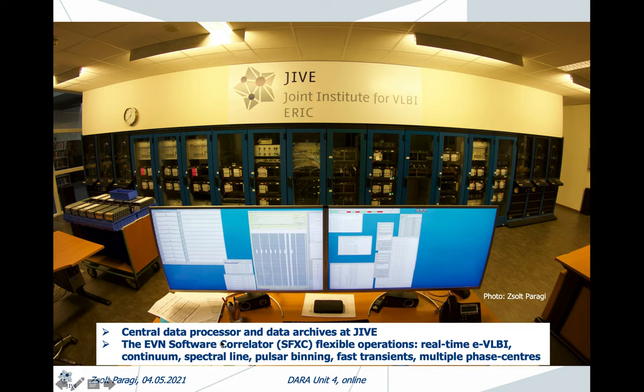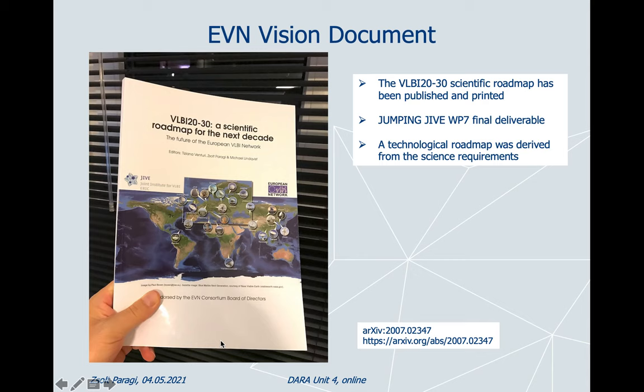All the data come in here eventually, and this is the place where the data from the various telescopes are combined and integrated, and then later processed and put in the archive. Now we are running the so-called EVN software correlator, which is very flexible in operation. It has a lot of interesting science modes. Besides real-time e-VLBI correlation, we can do continuous spectral line, pulsar binning projects, fast transients, and multiple phase centers for large fields of view.